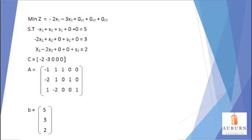The program then needs to be separated into its various matrices. The C row vector is the cost coefficients from the objective function. The A matrix is all the technological coefficients from the constraints, and the little b matrix is the right-hand side for all the constraints.